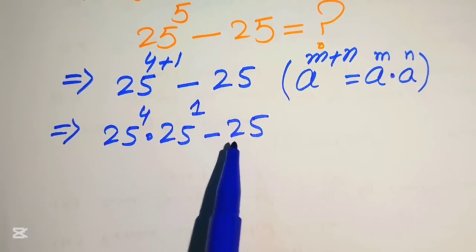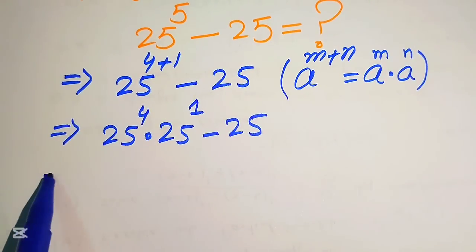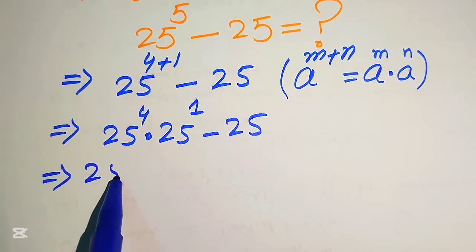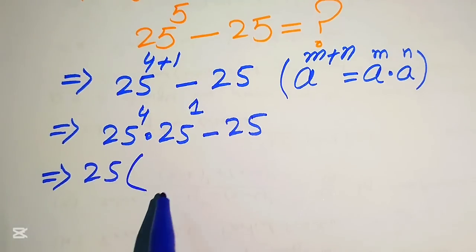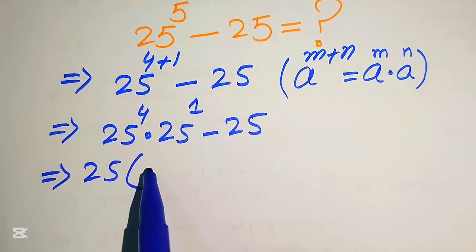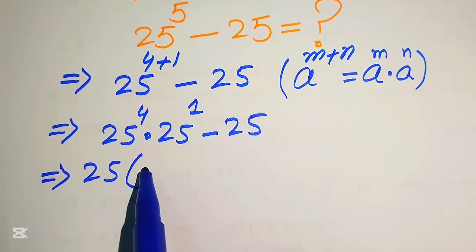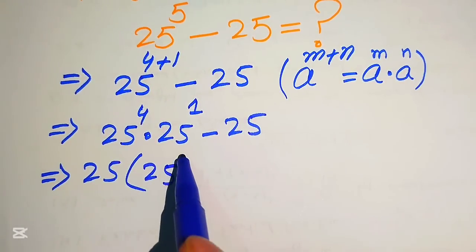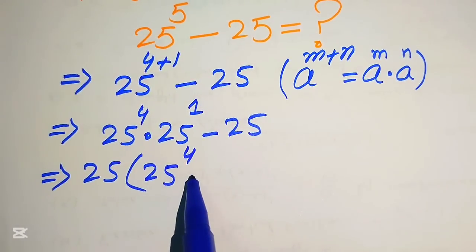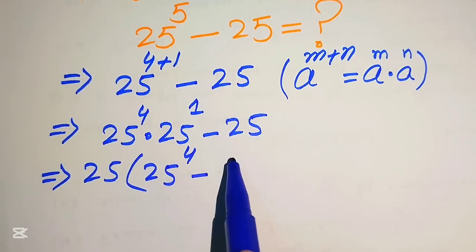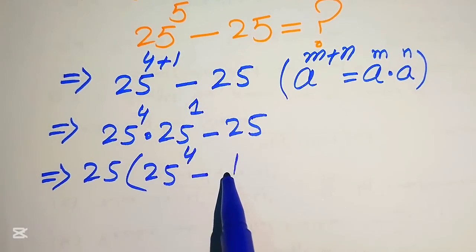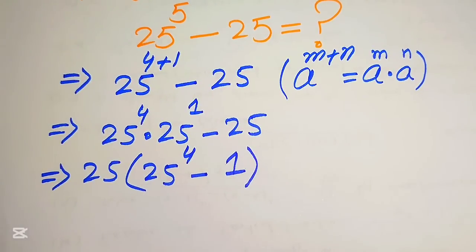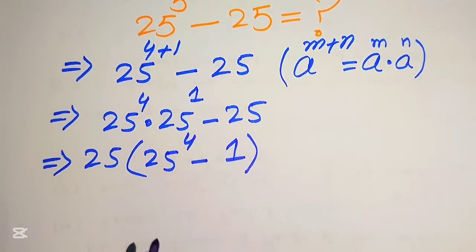According to this exponent law, we break the exponent and write it as 25 to the power of 4 multiplied by 25 to the power of 1, minus 25. From both of these terms we have 25 as the common factor, so we take out 25. The remaining terms give us 25 to the power of 4 minus 1.